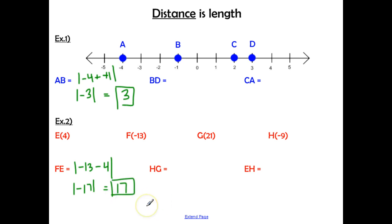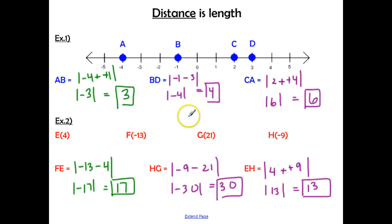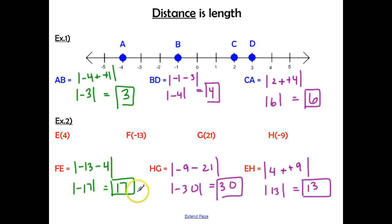Go ahead and press pause. Find all the other answers, then check back with me. Hopefully you got: the length of segment BD is 4, CA is 6, HG is 30, and EH is 13.